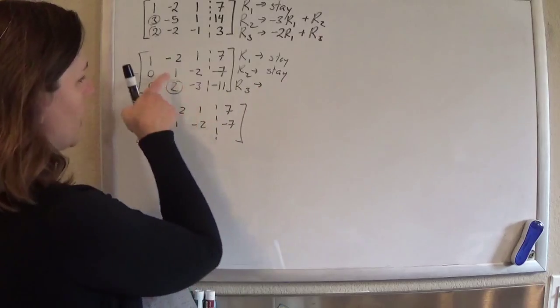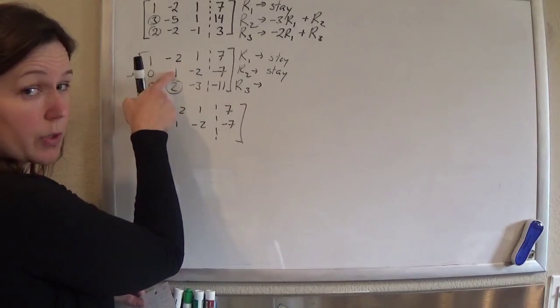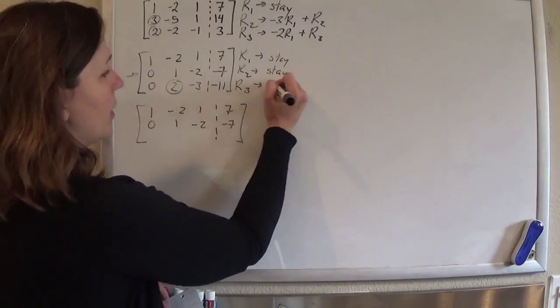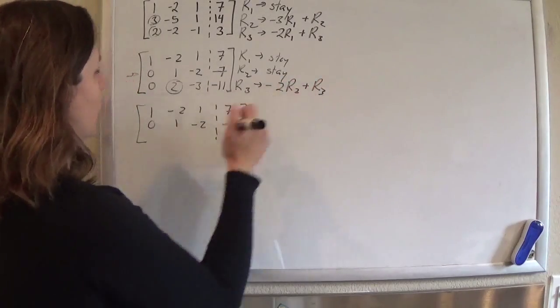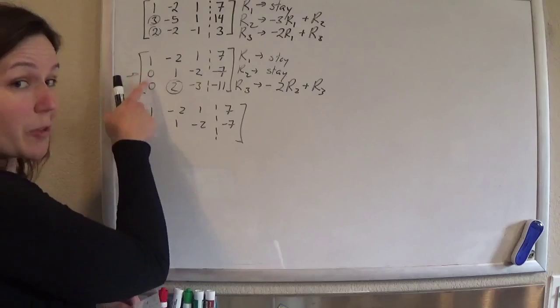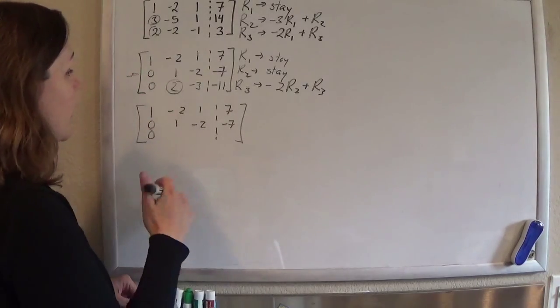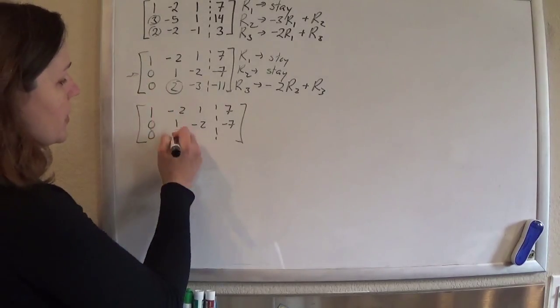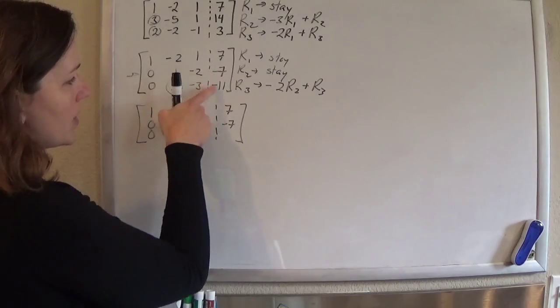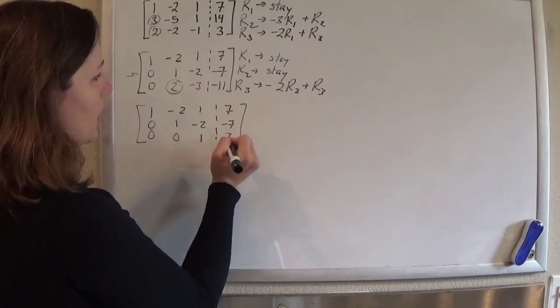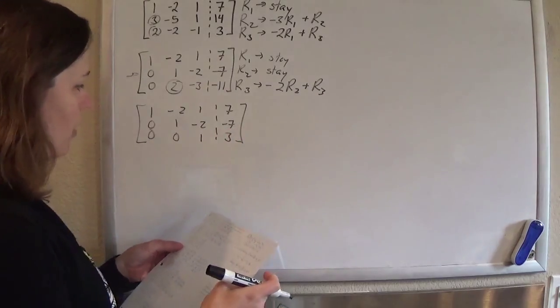So row 3 is going to become negative 2 times row 2 plus row 3. Negative 2 times row 2 plus row 3. So negative 2 times 0 plus 0, I keep that 0 that I worked so hard to get. Negative 2 plus 2 is 0. 4 minus 3 is 1. 14 minus 11 is 3. See how I did? Awesome.